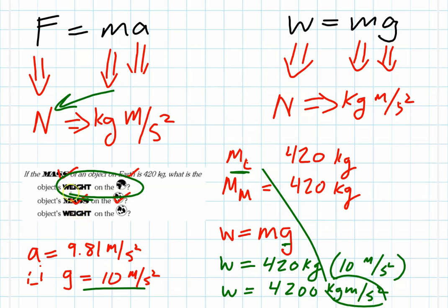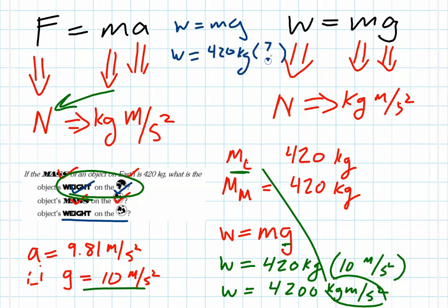The last thing we need to do is figure out the weight on the Moon. One way to do it: weight equals mass times the gravitational acceleration on the Moon, which is 420 kilograms times the Moon's gravitational value. We have to look that up, but values will be given to you if needed — say, for Jupiter or Mars. One fact we do know about the Moon, mentioned earlier, is that the Moon's gravitational effect is one-sixth compared to Earth.